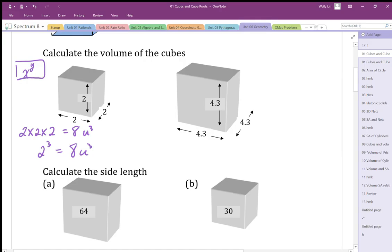So the same thing could be done with 4.3 cubed. We could do 4.3 times 4.3 times 4.3, and that's equal to whatever that's equal to. I don't have my calculator on me, but we can multiply those together, or we can do 4.3 cubed, and that gives us the volume of that cube.